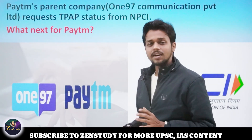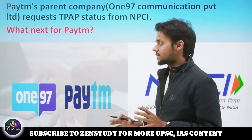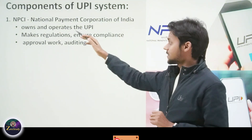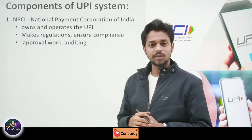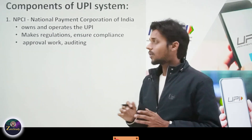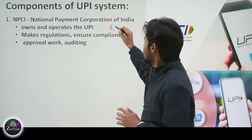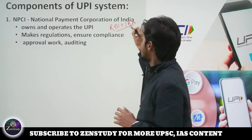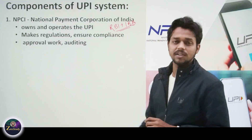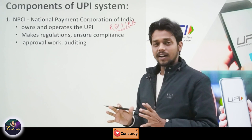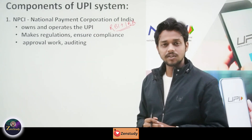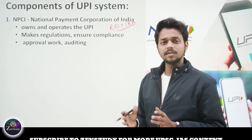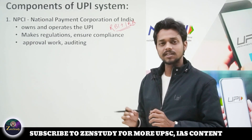First of all, we will understand some of the components of the UPI system. The first and most important component is the NPCI — National Payment Corporation of India. NPCI is a body which is owned by RBI and IBA — Reserve Bank of India and Indian Banks' Association. This is the NPCI organization.